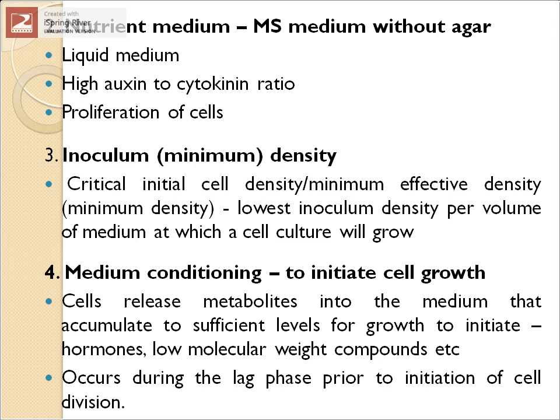The medium must be conditioned to initiate cell growth. Conditioning occurs when cells release metabolites — such as hormones and low molecular weight compounds — into the medium. When these accumulate at sufficient levels, growth begins. This usually occurs during the lag phase prior to initiation of cell division, similar to microbial cell growth where enzymes essential for multiplication are secreted during the lag phase as cells adjust to their surroundings.